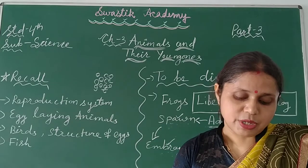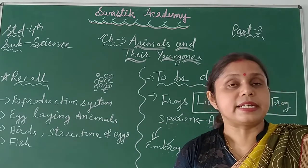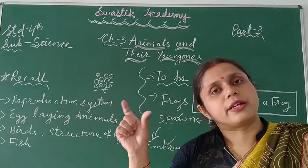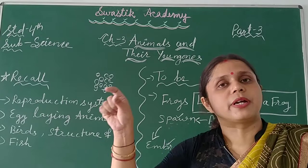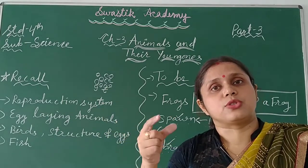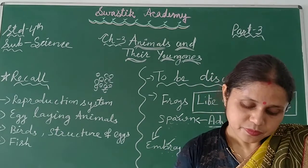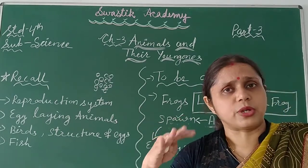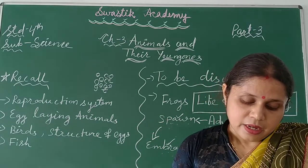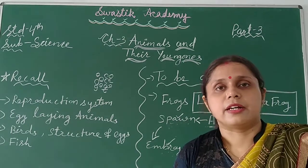The process of the transformation of a young one into an adult that looks completely different is called metamorphosis. Baby frog and adult frog are the same creature, but they look different from each other. After undergoing metamorphosis, the tadpole becomes an adult frog.